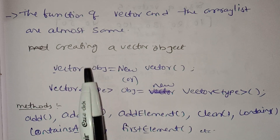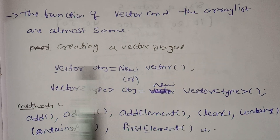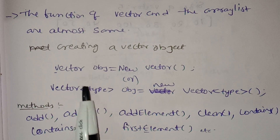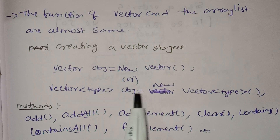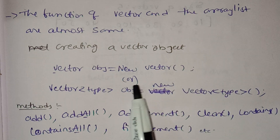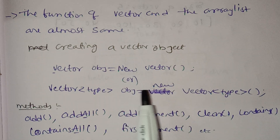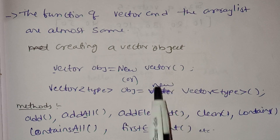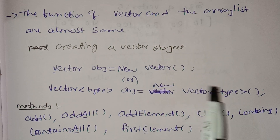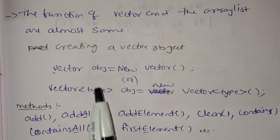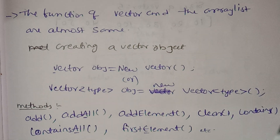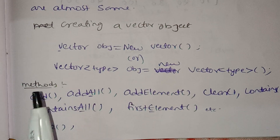To create a Vector object: use Vector, then the type in angular brackets, equals new Vector. The new operator is used with the constructor to create the Vector.